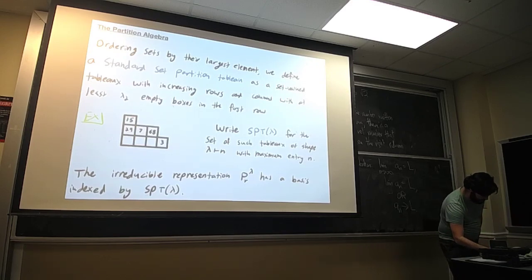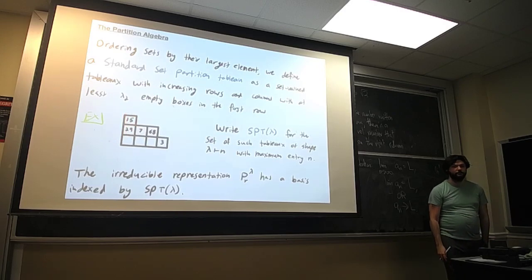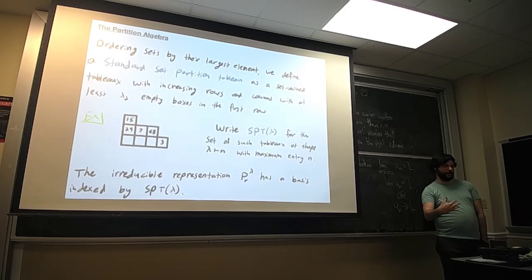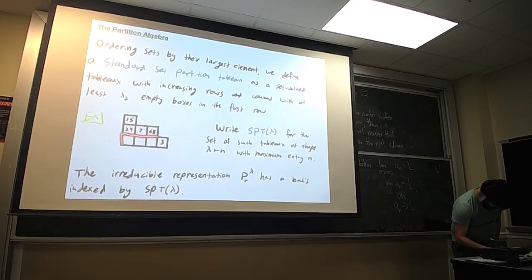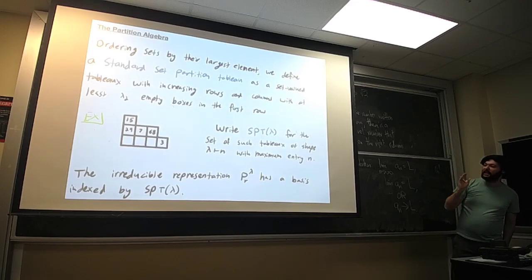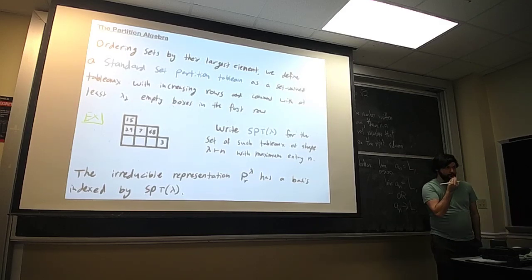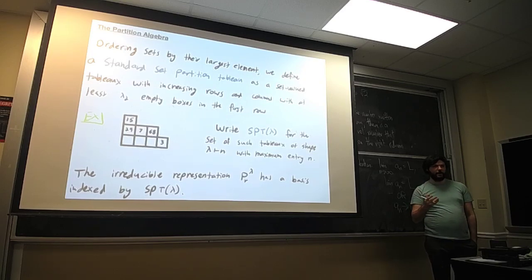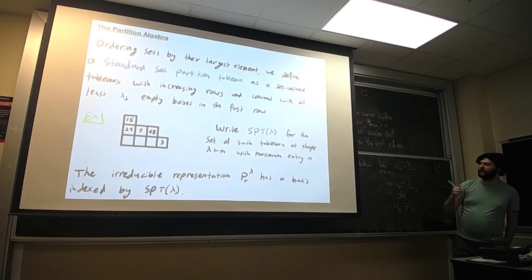This means, for example, a set {2,4} is less than {1,5} because 5 is a larger largest element than 4. We have enough empty boxes to push any content out from under the content from rows above the first. We write SPT(lambda) for the set of all standard set partition tableaux of shape lambda with maximum entry. Just as the symmetric group has representations given by standard Young tableaux, the irreducible representations of the partition algebra — the centralizer algebra Pr(n) — have a basis indexed by these set partition tableaux.